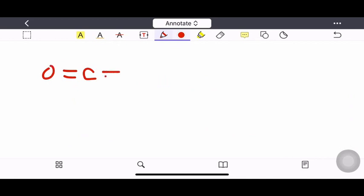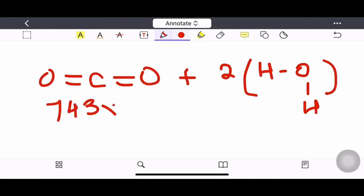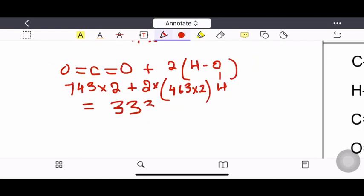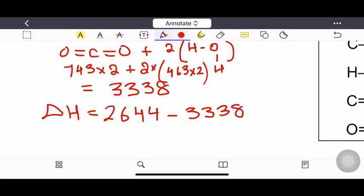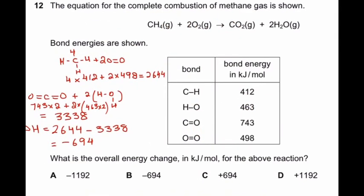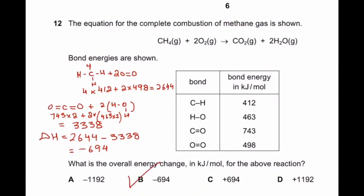So, total OH bonds will be four. Bond energy value calculate looking from the table. Delta H or energy change is equal to energy required to break the bonds minus energy released when new bonds are formed. The answer is minus 694 kilojoule per mole. So, correct option is option B.